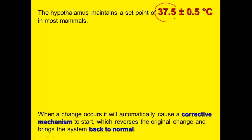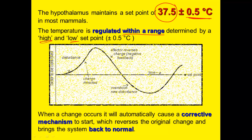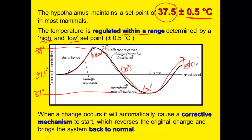The hypothalamus wants to maintain a set point of around 37.5 degrees Celsius — that's true in most mammals. It regulates within a high and a low set point, allowing temperature to rise by 0.5 degrees above 37.5 up to 38 degrees and as low as 37 degrees. If you heat up, your body will initiate mechanisms like sweating to cool you down. If you're too cool, your body will initiate things like shivering to warm you back up. Whenever a change occurs in your body, this corrective mechanism will start to bring you right back to normal.